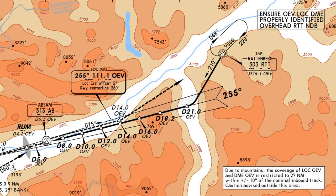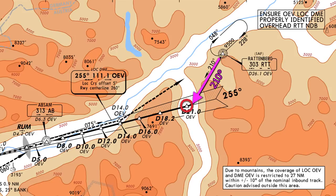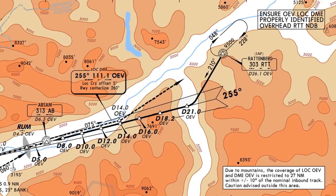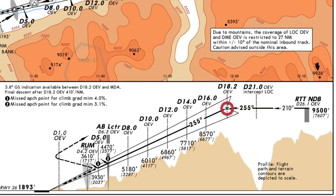The localizer DME east approach into Innsbruck begins at the Rathenburg NDB. We'll arrive at the Rathenburg NDB at 9,500 feet or above. We'll depart the NDB at a radial of 210 from the NDB to the point D21, or distance 21 from the localizer. We'll descend to or maintain 9,500 feet until we intercept the glide slope. Once we reach point D21 we'll intercept the localizer, and at point D18 we'll intercept the glide slope at 9,500 feet.